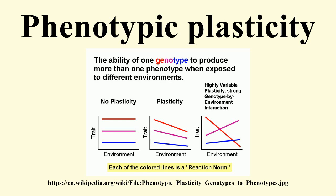Plasticity is usually thought to be an evolutionary adaptation to environmental variation that is reasonably predictable and occurs within the lifespan of an individual organism, as it allows individuals to fit their phenotype to different environments. If the optimal phenotype in a given environment changes with environmental conditions, then the ability of individuals to express different traits should be advantageous and thus selected for. Hence, phenotypic plasticity can evolve if Darwinian fitness is increased by changing phenotype. However, the fitness benefits of plasticity can be limited by the energetic costs of plastic responses as well as the predictability and reliability of environmental cues.